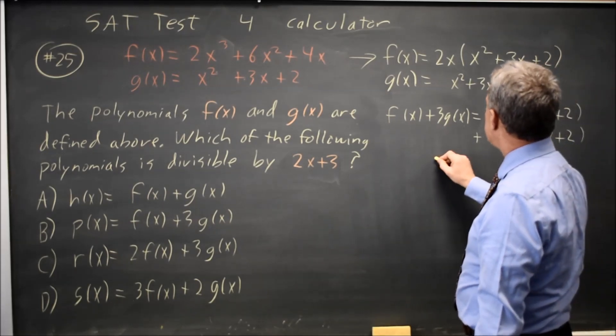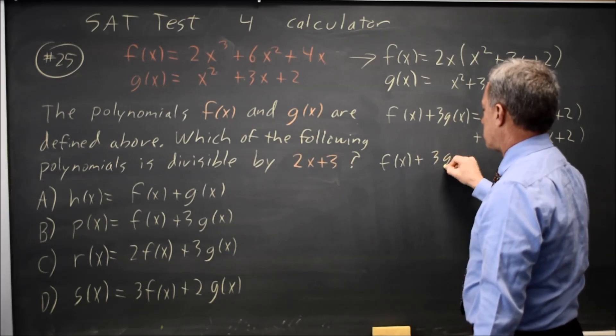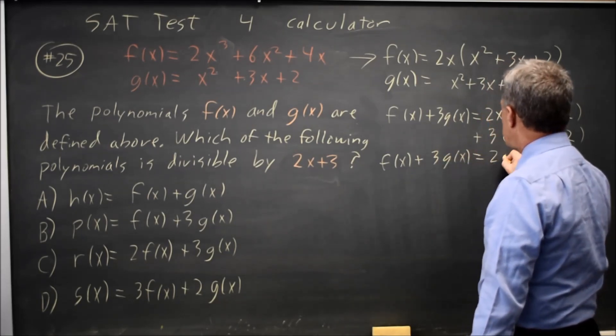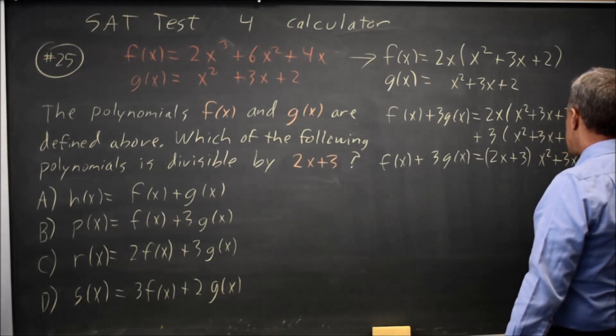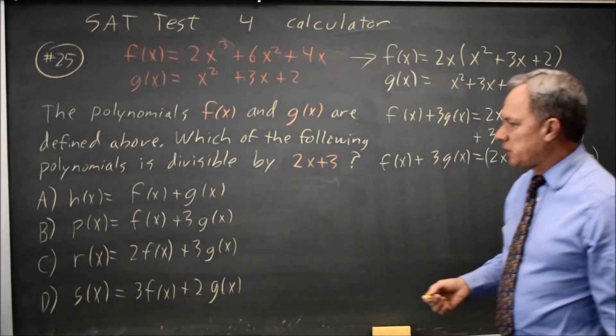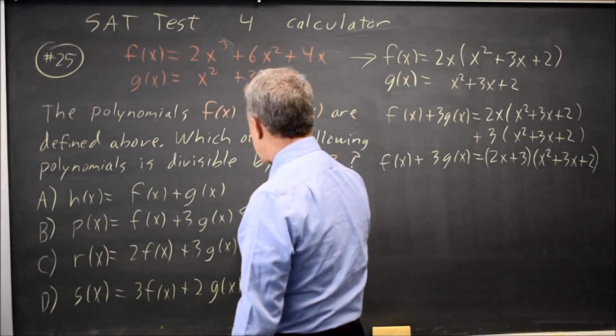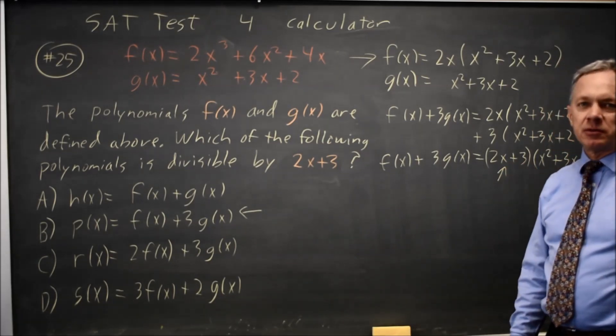So f plus 3g will be 2x plus 3, meaning that quantity times x squared plus 3x plus 2, meaning that choice B would be the correct answer that is evenly divisible by 2x plus 3.